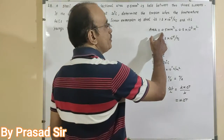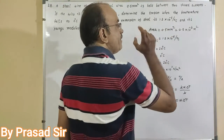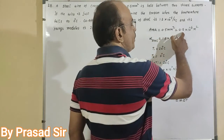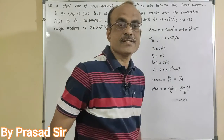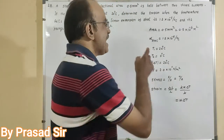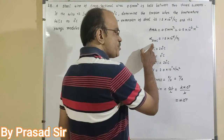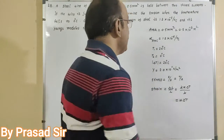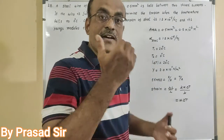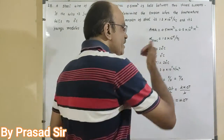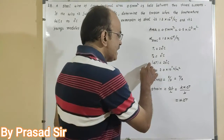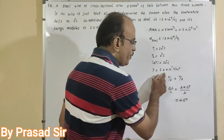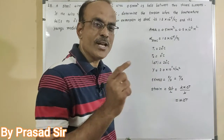Given: area equal to 0.5 millimeter square. Since all quantities must be in SI units, I convert this to 0.5 × 10⁻⁶ meter square. The coefficient of linear expansion of steel is 1.2 × 10⁻⁵ per degree centigrade. Initial temperature is 20 degrees centigrade and the temperature falls to 0 degrees centigrade, so the change in temperature delta T equals 20 degrees centigrade. Young's modulus is 2.0 × 10¹¹ newton per meter square.